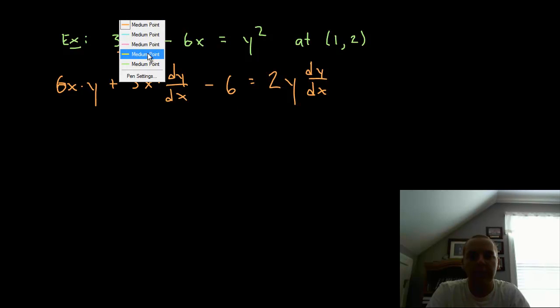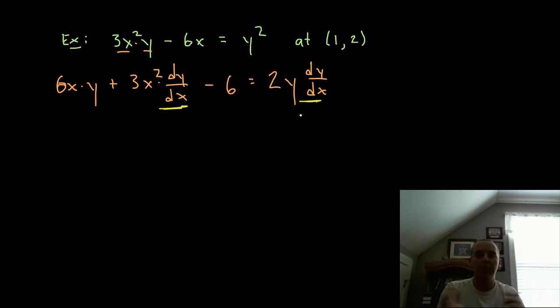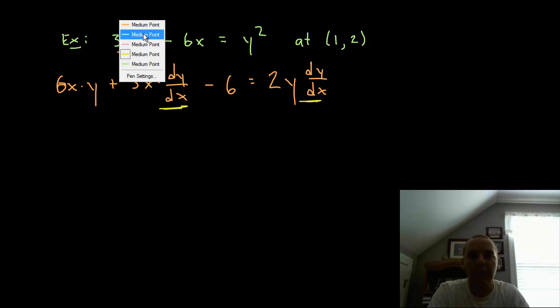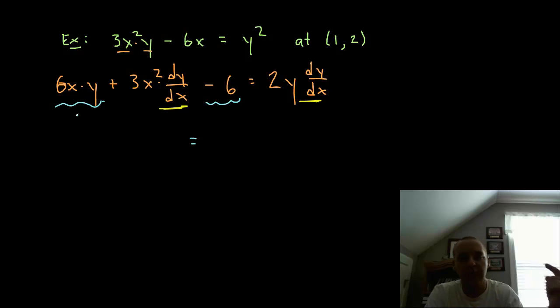So I see the dy dx's here, here's one and here's one. So the steps go like this: we're going to sort these terms. We're going to put everybody that has a dy dx on one side, and everybody who does not have a dy dx will move to the other side. So this term and this term do not have a dy dx, so let's put those on the right. We'll have 6 minus 6xy.